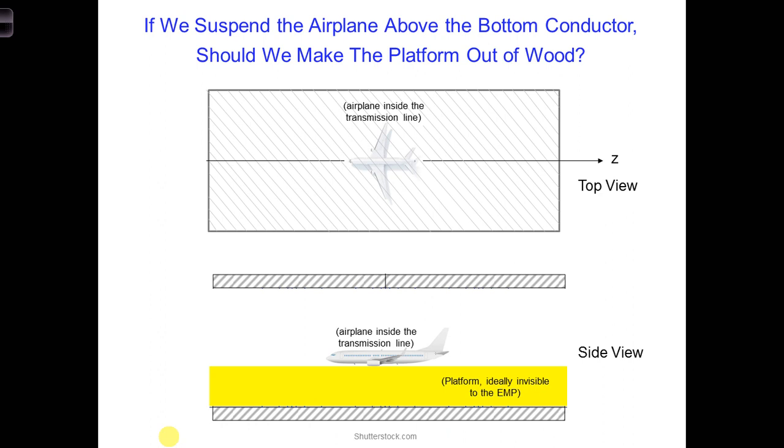So let's get back to our measurement setup now. Now we can start to think about how the electromagnetic wave will interact with the wood platform that we're considering using. First, we can think about whether the wood, whether we have the displacement current or the conduction current, would dominate in the wood. And let's look over the frequency range from 1 to 300 megahertz.